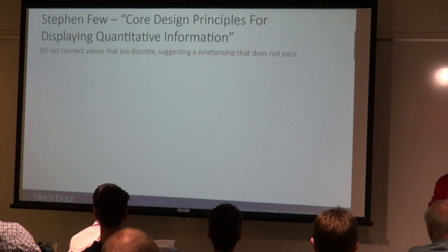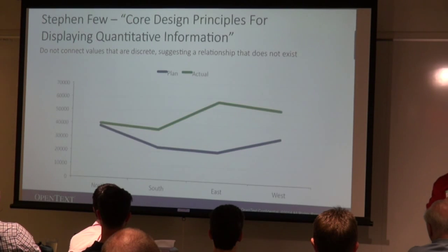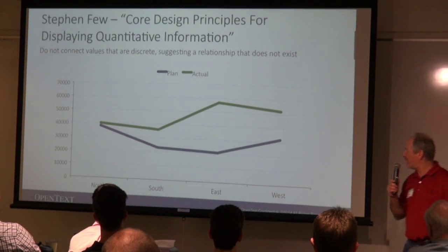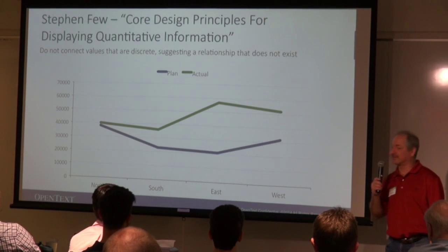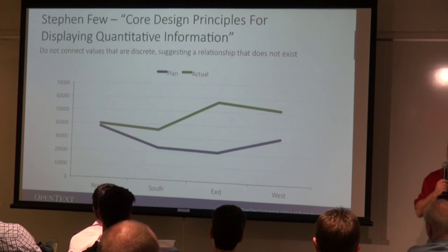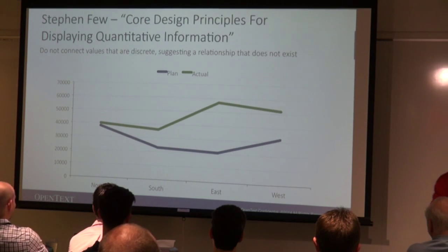Do not connect values that are discrete, suggesting a relationship that doesn't exist. North, east, south, west — there's no trend here. Don't use lines when it's not appropriate. We'll talk about when to use which charts in more detail.